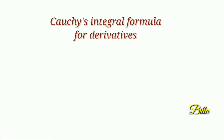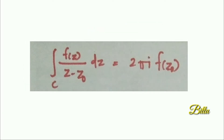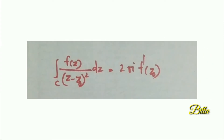Let me start from Cauchy's Integral Formula. We are all familiar with Cauchy's Integral Formula: it is the integral over C of f(z) by (z minus z₀) dz equals 2πi·f(z₀), where z₀ is a point within C and C is a simple closed curve. In this formula, note that the term in the denominator (z minus z₀) is with power 1. You can apply this only if its power is 1. If its power is 2, then the integral over C of f(z) by (z minus z₀)² dz...